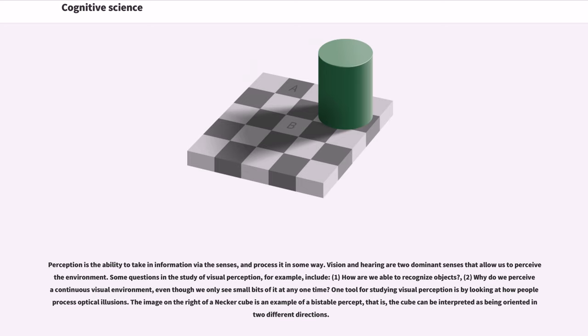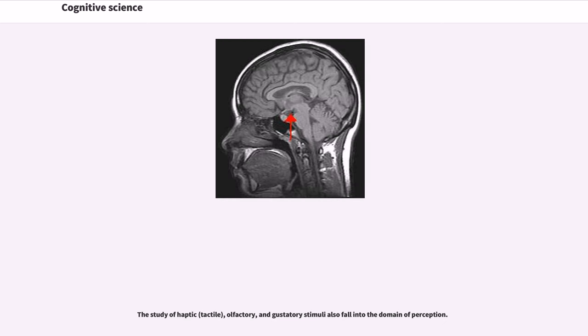Perception is the ability to take in information via the senses, and process it in some way. Vision and hearing are two dominant senses that allow us to perceive the environment. Some questions in the study of visual perception, for example, include: 1. How are we able to recognize objects? 2. Why do we perceive a continuous visual environment, even though we only see small bits of it at any one time? One tool for studying visual perception is by looking at how people process optical illusions. The image on the right of a Necker cube is an example of a bistable percept, that is, the cube can be interpreted as being oriented in two different directions. The study of haptic, tactile, olfactory, and gustatory stimuli also fall into the domain of perception.